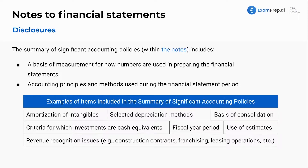Here we have disclosures that are made within the summary of significant accounting policies, which is within the notes of the financial statements. That includes a basis of measurement for how numbers are used in preparing the financial statements, describing qualitative factors of the numbers, and the accounting principles and methods that are used during the financial statement period.